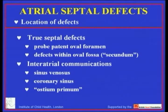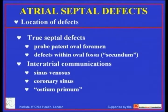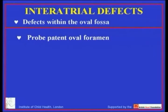And then the ostium primum defect, which hopefully you are all aware is really an atrioventricular septal defect with common atrioventricular junction but with separate valvar orifices for the right and the left. So let's start by looking at the simplest form of deficiency within the oval fossa, and that is probe patency of the oval foramen.